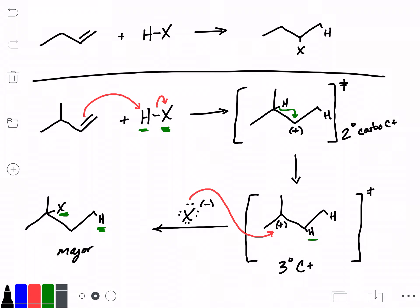And this is what we would expect now to be our major product because it goes through the more stable carbocation intermediate. We probably would also have some of our product that would be what we would have expected, but that would be a minor product.